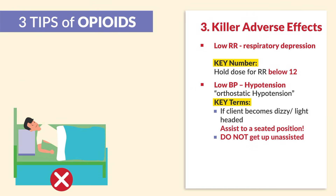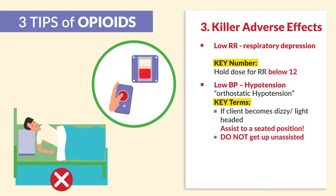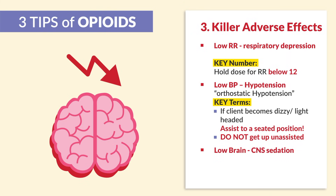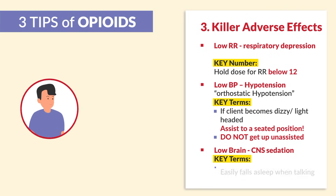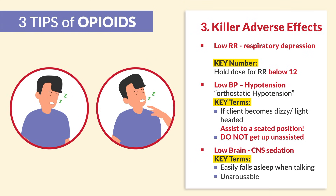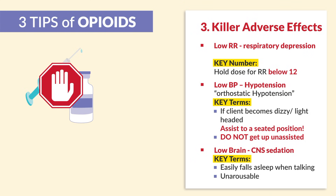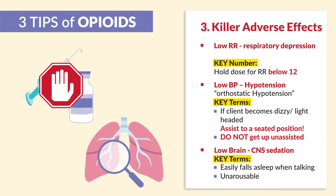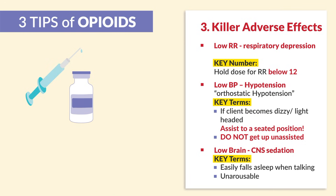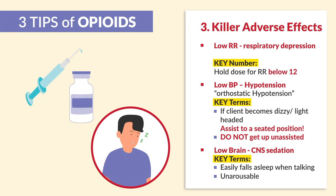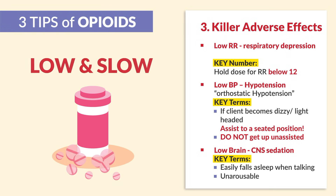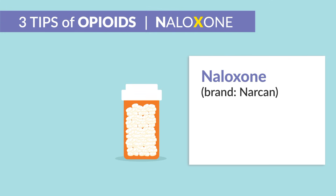Teach the patient not to get up unassisted and to use the call light when getting out of bed. For the low brain CNS sedation, the key term is easily falls asleep when talking and unarousable — hold any additional narcotics and monitor respiratory status. Sedation comes before respiratory depression, so watch out for this. You may give additional narcotics when the patient's level of consciousness improves — when they're easily aroused or only slightly drowsy. If things get too low and slow and the patient starts to overdose, give the antidote naloxone, brand name Narcan.